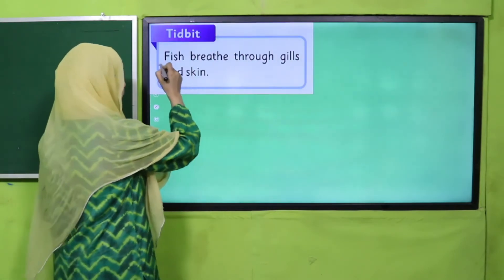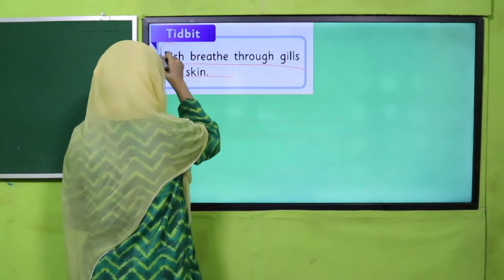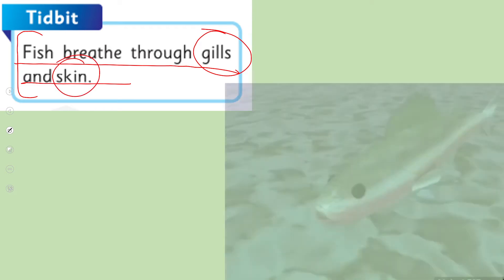Fish breathe through gills and skin. Fish are also vertebrates, but they do not have lungs for breathing. Instead, they have gills, and they can also breathe through their skin.